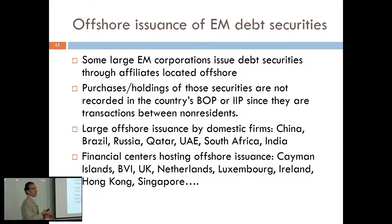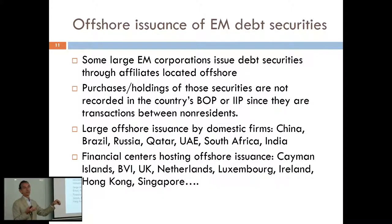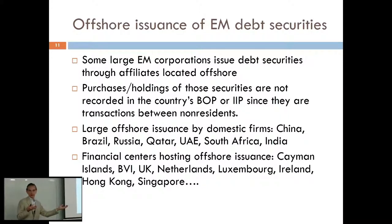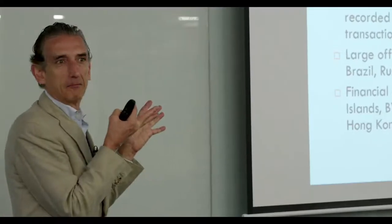The point is, when Petrobras issues a bond in the Netherlands, from a balance of payments perspective, if that bond is bought by euro area investors, it is a purchase of a portfolio debt security by euro area investors of a debt security issued by a Dutch entity. So it will be a portfolio debt liability for the Netherlands and a portfolio debt asset for the investor. The money makes its way back to Petrobras in Brazil — the affiliate on-lends to the parent — and that's an FDI transaction, recorded in the new BOP manual as FDI in Brazil. So it's truly portfolio debt, but in the balance of payments it is recorded as FDI.